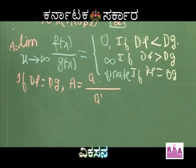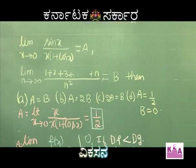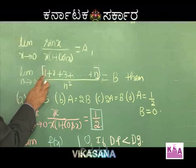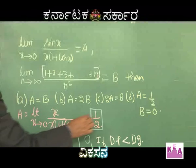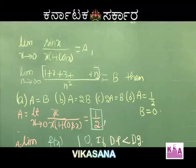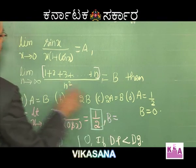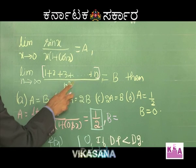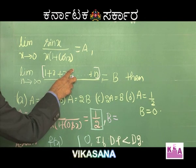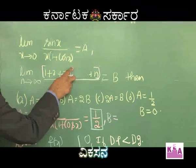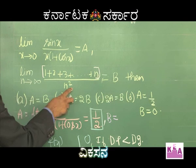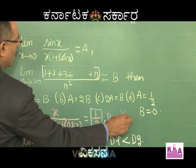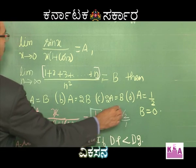Now, 1 + 2 + 3 + ... + n = n(n+1)/2. So b = limit n→∞ of [n(n+1)/2] / n². The degree of the numerator is 2 and the degree of the denominator is also 2. Since they are equal, the answer is the ratio of leading coefficients: the numerator's leading coefficient is 1/2, and the denominator's is 1, so b = (1/2)/1 = 1/2.